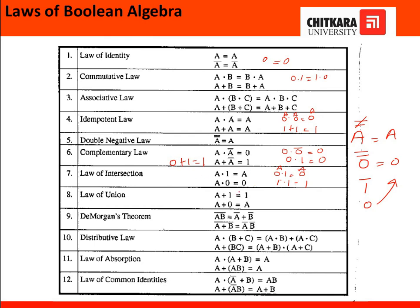The law of union is really important: a+1 equals 1. Whether a equals 0 or 1, the answer is always 1. Next, a+0 equals a: 0+0 is 0, and 1+0 is 1. The basic approach to learning these laws is to substitute values rather than just cramming them.